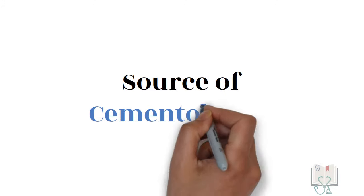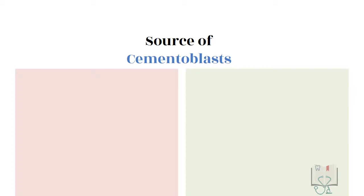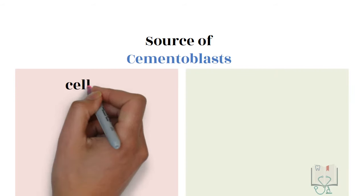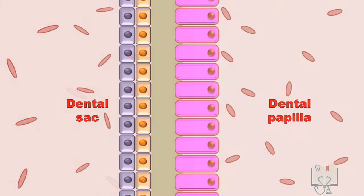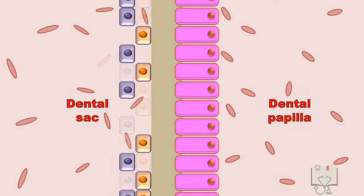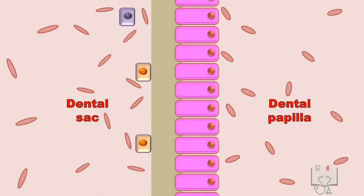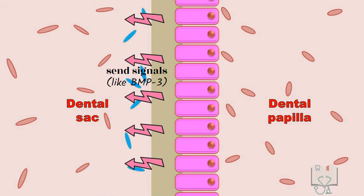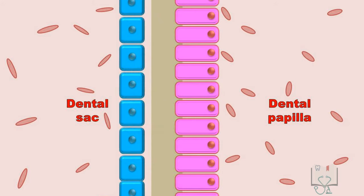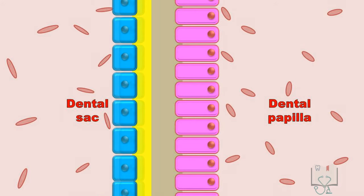Cementoblasts are known to differentiate from two sources. First source: cells of the dental sac. After deposition of radicular dentine, the cells of Hertwig's epithelial root sheath start degenerating. This degeneration exposes the ecto-mesenchymal cells of the dental sac to radicular dentine which, on receiving signals, differentiate into cementoblasts which subsequently deposit cementum.